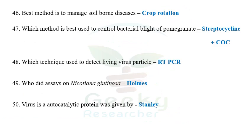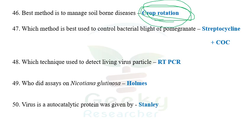The next question: best method for management of soil-borne diseases. Among the options, crop rotation seems to be one of the best methods for controlling soil-borne diseases. If soil solarization was given as an option, that would be the most appropriate answer. I'm not sure whether soil solarization was given as an option in the 2019 exam. If it was, then soil solarization would definitely be the answer.